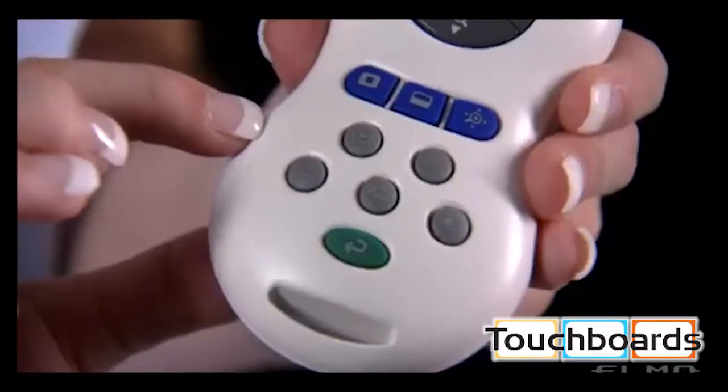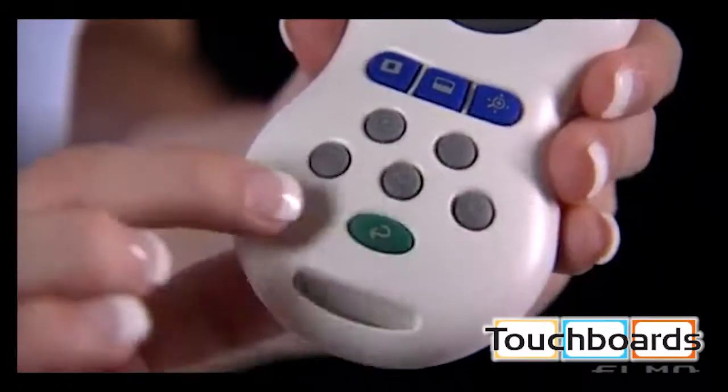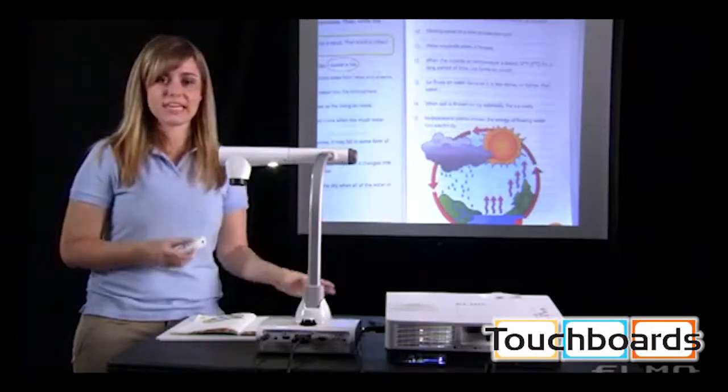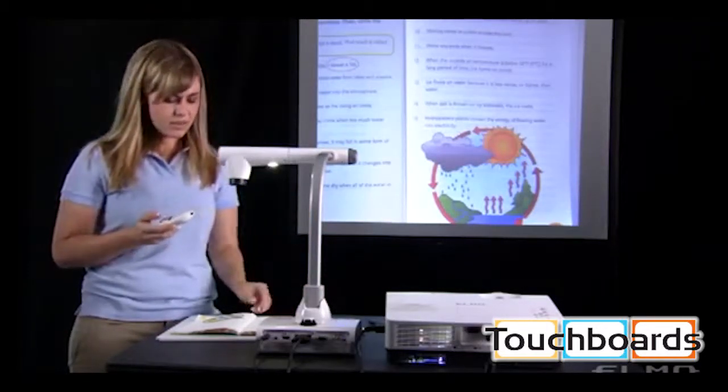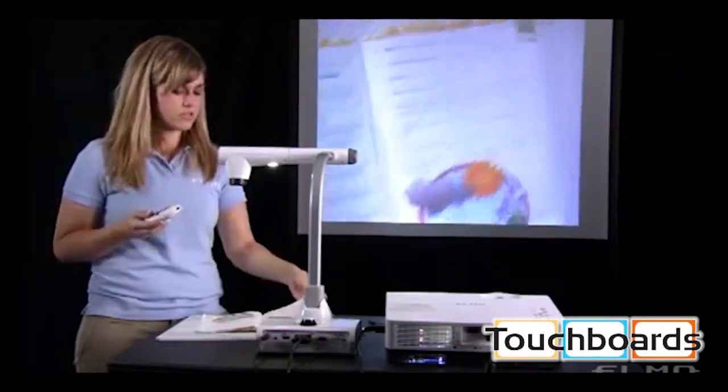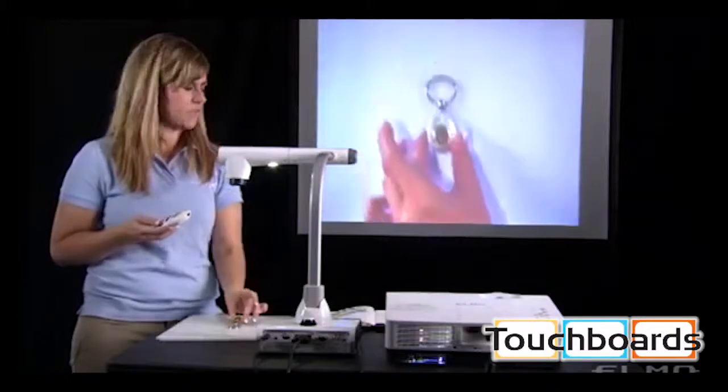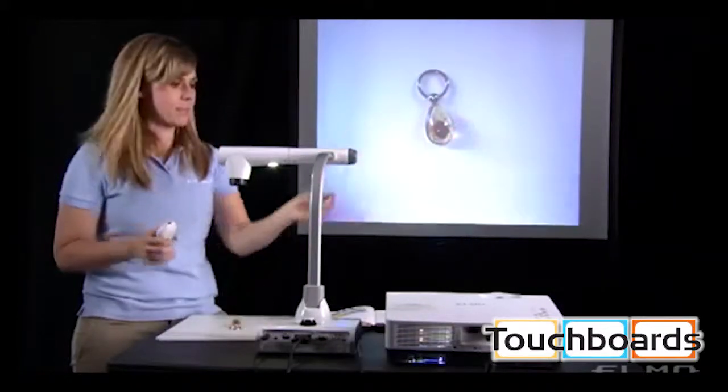The last gray button is a split screen. This will let you compare the live image and the saved image from an SD card. So, if I want to maybe show two things at once, like the front of a page or the front of something and the back of something,